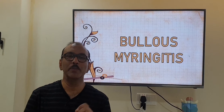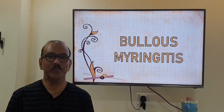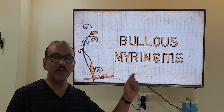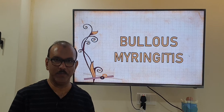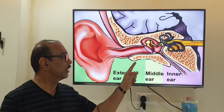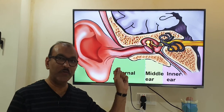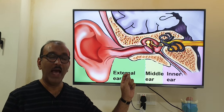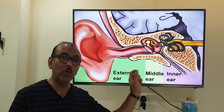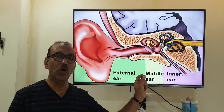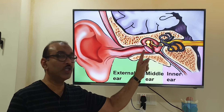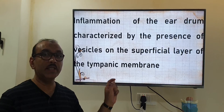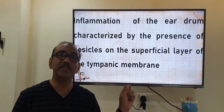Let us discuss bullous myringitis. The word myringitis means infection of the eardrum. When there is infection of the eardrum and there is formation of small bullae on the superficial part of the eardrum, that is termed as bullous myringitis.